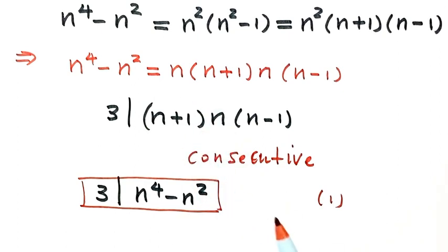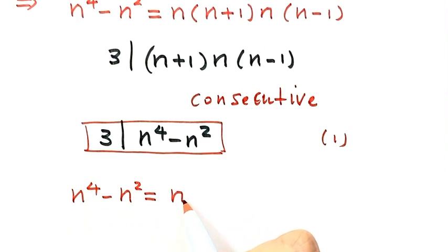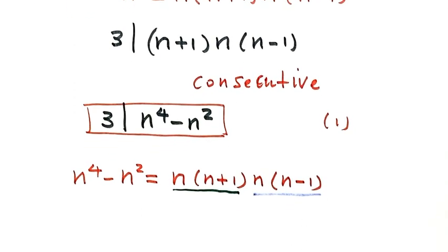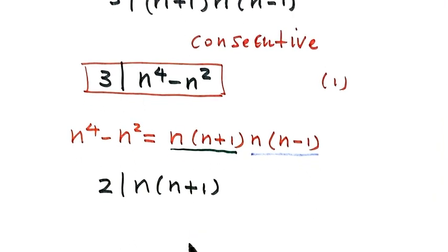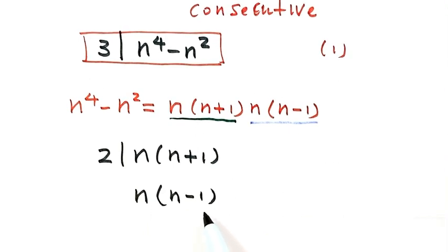Now let's check divisibility by 4. Write down n to the fourth minus n squared as the product of n times (n plus 1) and n times (n minus 1). Notice that n and (n plus 1) are two consecutive integers, so one of them is divisible by 2, meaning their product is divisible by 2. Similarly, n and (n minus 1) are two consecutive integers, so one of them is divisible by 2, and their product is also divisible by 2.